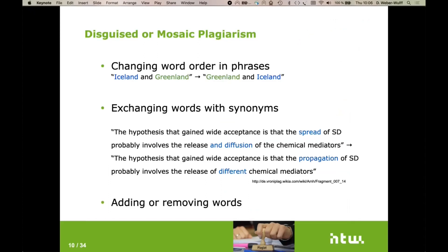That kind of plagiarism is easy to determine. As soon as people start disguising or putting things together, we have terms disguised plagiarism or mosaic plagiarism. This is where it starts to get difficult for software. Software is pretty good at finding copy and paste plagiarism. But as soon as the word order is changed, for example, Iceland and Greenland becomes Greenland and Iceland. Software says those are different strings because they don't see the meaning of these words.